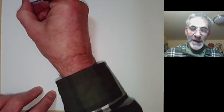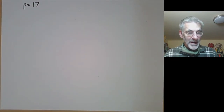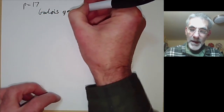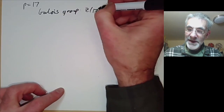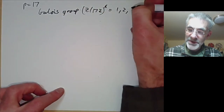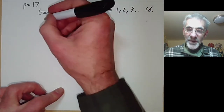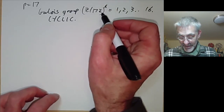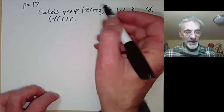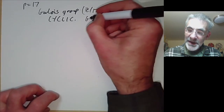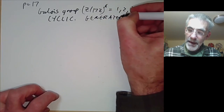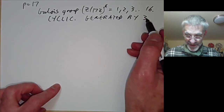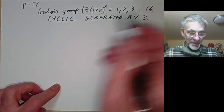So we know the Galois group is (Z/17Z)* = {1, 2, 3, …, 16}. This is cyclic, because the non-zero elements mod p always form a cyclic group — a generator is called a primitive root. In fact, this group is generated by the number 3. Since it's cyclic of order 16, it has subgroups of orders 1, 2, 4, 8, and 16.